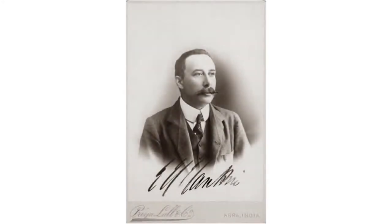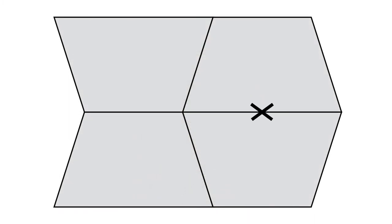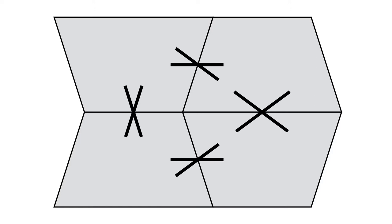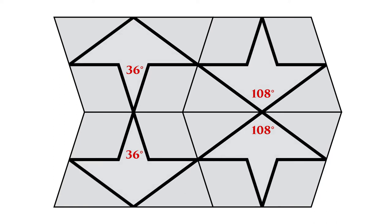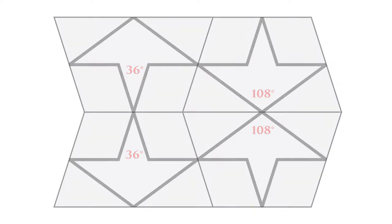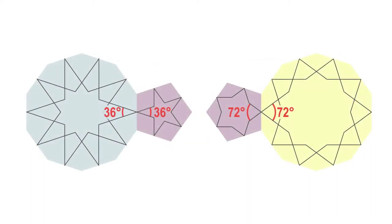In his publication from 1925, Hankin describes a way in which tile patterns interact with each other. For sides with equal length, lines cross over to other tiles seamlessly — the rule is that they have to cross at the same point and with the same angle. This is the Polygon in Contact method, or PIC for short. In Islamic geometric art, the main edge rule has two lines crossing at midpoint. For five-fold patterns, the angle between the lines is mostly 36 degrees or 72 degrees.